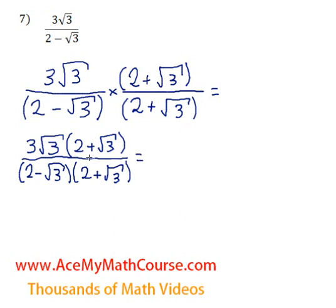Now we can expand everything. Over here we have 3 root 3 times 2 and 3 root 3 times the root of 3. So we're going to have 6 root 3 plus 3 root 9. Why is that? Because 3 root 3 times 2, we're just multiplying 3 times 2 to get 6. And the root of 3 doesn't multiply by anything because we don't have a root multiplying the 2.